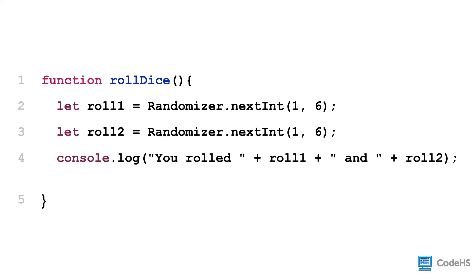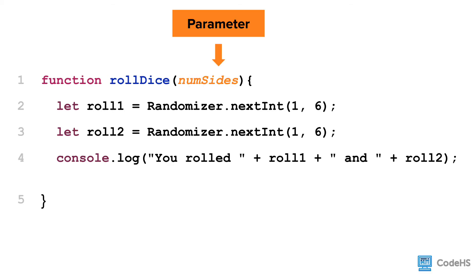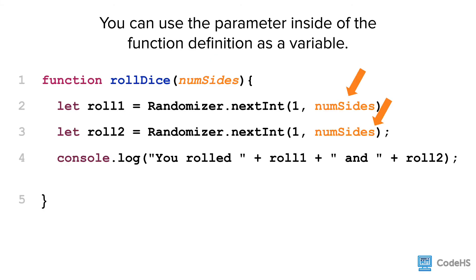Let's go back to our rollDice function and add parameters so that we can tell the function how many sides the dice should have. We can enter the parameter numSides into the parentheses of our function. Once we have given a function a parameter, we can then use the parameter inside of the function definition as a variable.